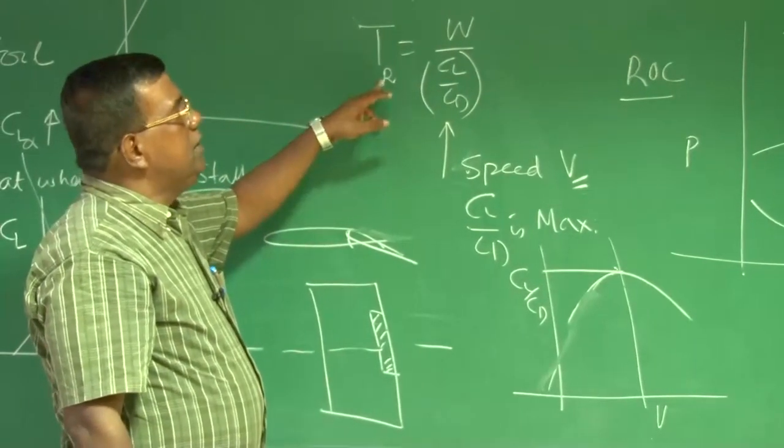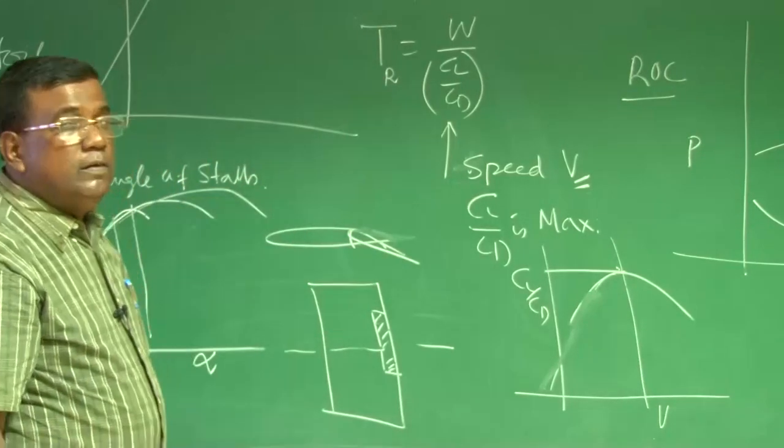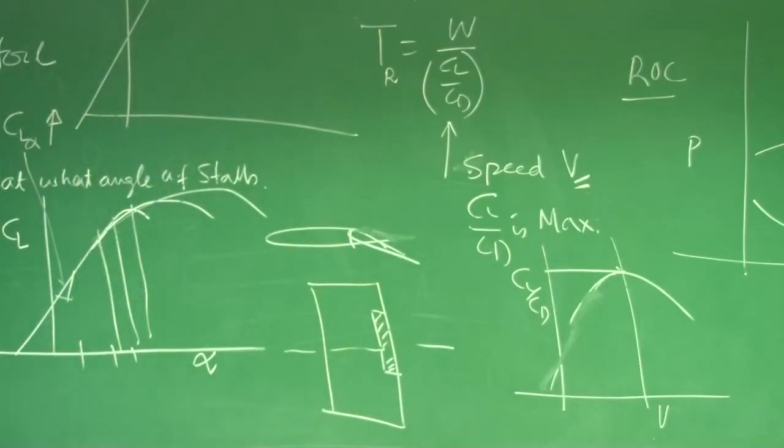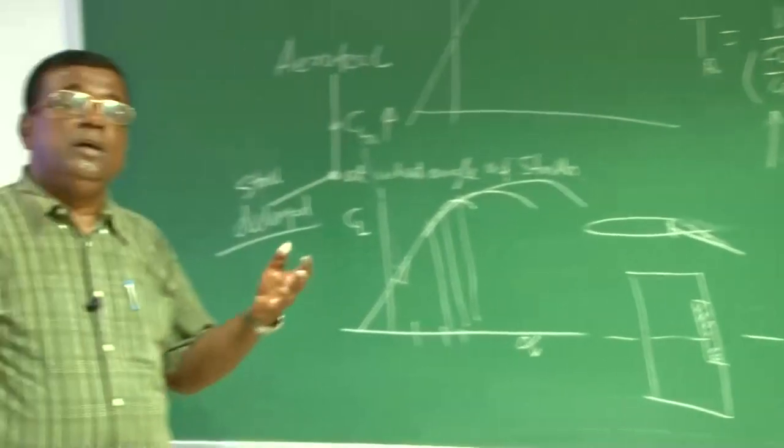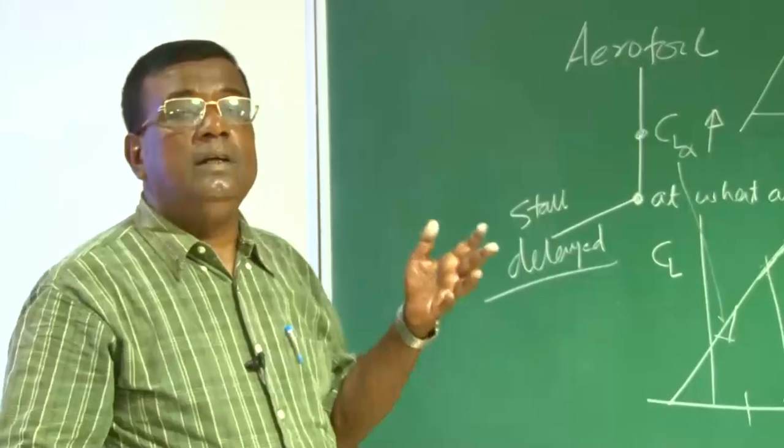CL by CD maximum, for thrust required minimum, that means CL equal to square root of CD naught by K, right. And you also know that, if I go on increasing aspect ratio, then we get unrealistic value of CL, that CL aircraft may stall.